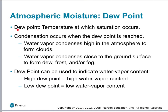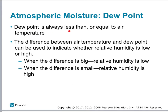The dew point is the temperature at which saturation occurs. Condensation occurs when the dew point is reached — water vapor condenses high in the atmosphere to form clouds, or close to the ground surface to form dew, frost, or fog. Fog and clouds are basically the same thing, just occurring at different locations. A high dew point indicates high water vapor content; a low dew point indicates low water vapor content. The dew point is always less than or equal to the air temperature. A large difference between air temperature and dew point means low relative humidity; a small difference means high relative humidity.